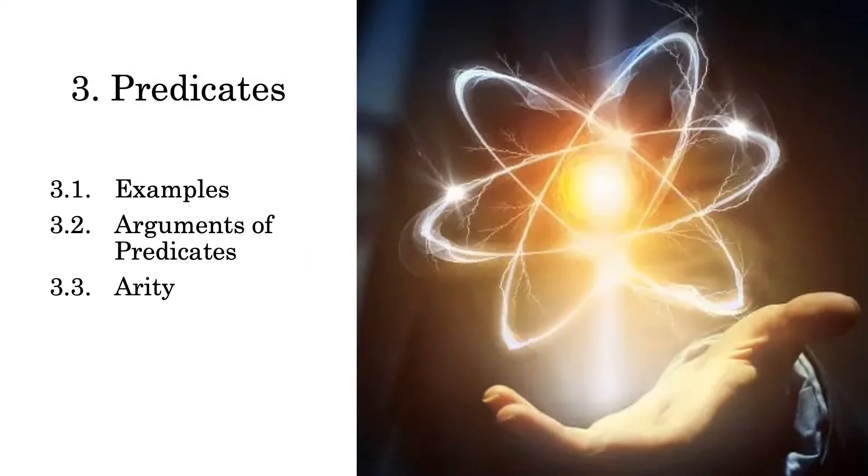Okay, so remember that there are two ingredients to an atomic sentence. There's the individual constant and there's the predicate. We'll talk about predicates now. I'm going to break up the discussion into three parts. First, I'm just going to give you some examples. Then we'll talk about a term of art called the argument of a predicate. And finally, we'll talk about the arity of a predicate.